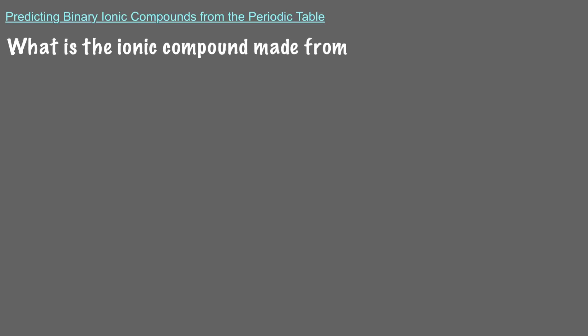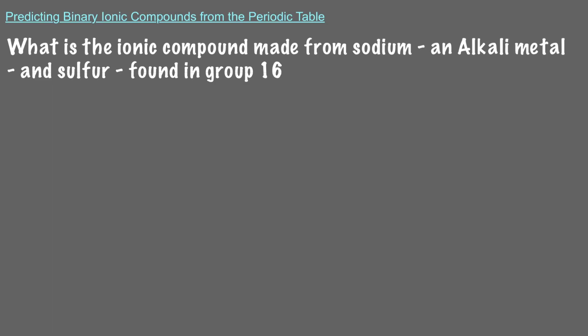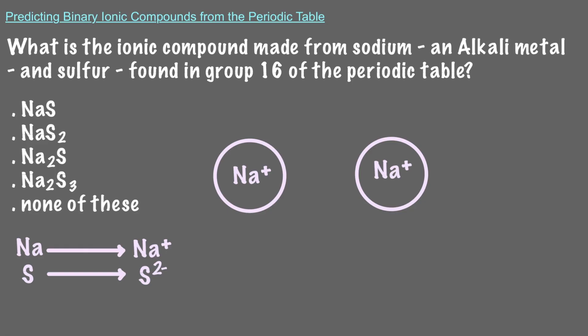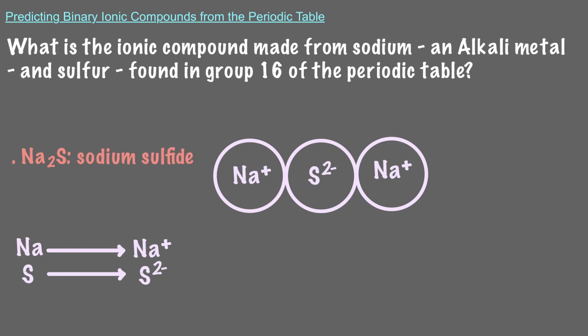Let's do one last example. What is the ionic compound made from sodium, an alkali metal, and sulfur, found in group 16 of the periodic table? Sodium is in group 1 of the periodic table, so it makes a cation with a positive 1 charge. Sulfur is in group 16, so it makes an anion with a negative 2 charge. That means we need 2 sodium cations to balance out the charge of the sulfur anion. Therefore, our ionic compound has 2 sodiums and 1 sulfur — sodium sulfide.